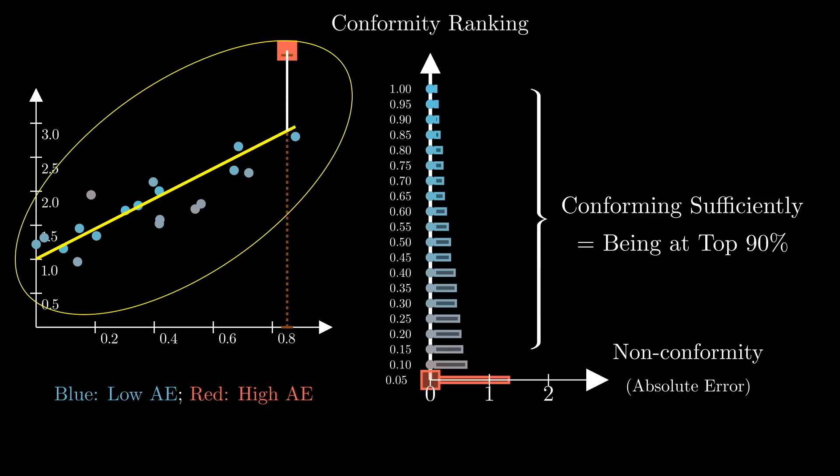The first idea that may come to mind is to exclude the square, the test point, from the bag so that moving it does not influence the bag anymore. But this is not a good idea because it will result in the points inside the bag having lower absolute errors than the square, and thus unfairly increases the square's non-conformity, especially when the model is more complex than a simple line.